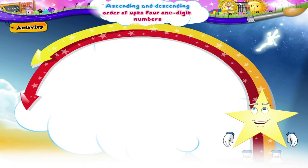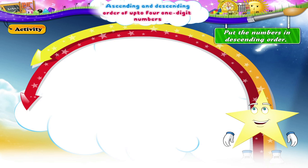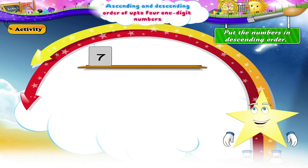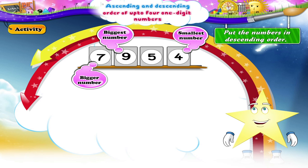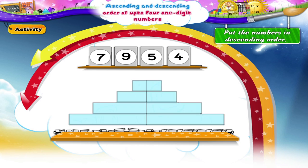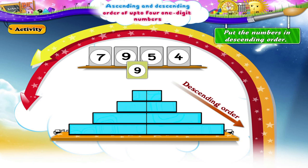And in this activity, Starry, we have to first circle the biggest number, then the smallest, and then put the numbers in descending order. Let's begin. Seven, nine, five, four. Starry, the biggest number here is nine. And the smallest number is four. Between seven and five, seven is the bigger number. The numbers arranged in descending order are nine, seven, five, four.